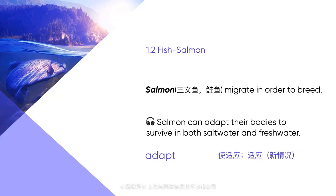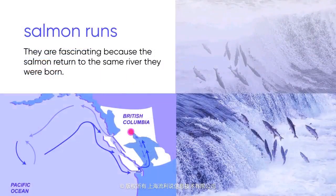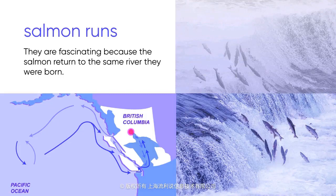Salmon migrations are also known as salmon runs. They are fascinating because the salmon return to the same river where they were born — similar to how we return home for Chinese New Year. If salmon spend their lives in oceans, how do they remember where they were born? Some scientists believe that salmon can also sense the Earth's magnetic fields, but they are not 100% sure. As the saying goes, we are surrounded by mysteries, and what we know about the world is very little.